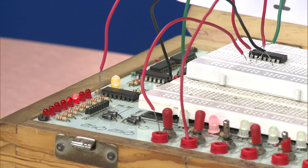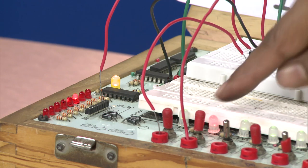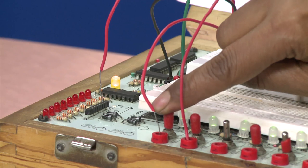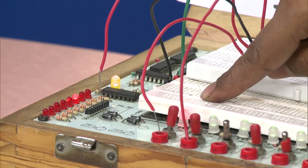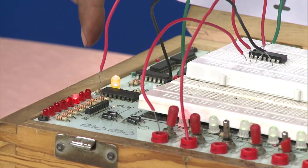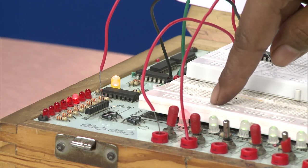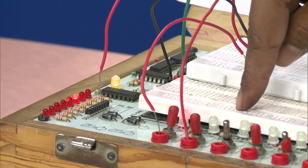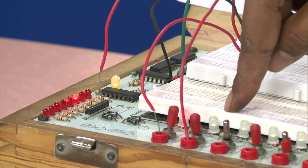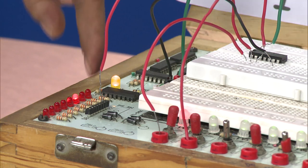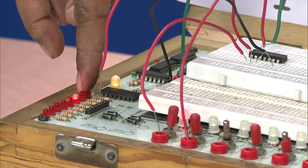If we do the reverse combination, that means we make B equals 0 while we make A equals 1. Again the output shows it to be glowing. So both for A equals 0 and B equals 1, or B equals 0 and A equals 1, the output is indicated as 1.